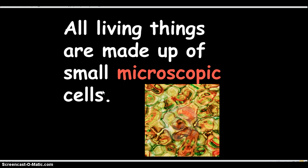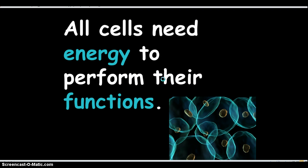All living things are made up of small microscopic cells. Connor explains that means you can't see them — you have to use a microscope to look at them. All cells need energy to perform their functions. We just studied macromolecules. The energy source for all cells, plant and animal, is glucose. We get our glucose by eating carbohydrates. Plants have to make their own glucose, and that's what photosynthesis is all about.